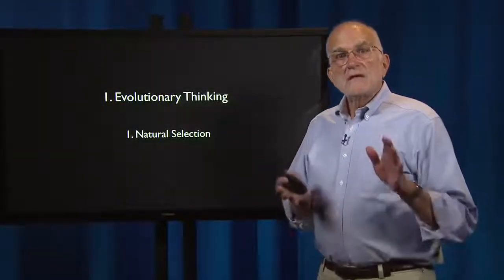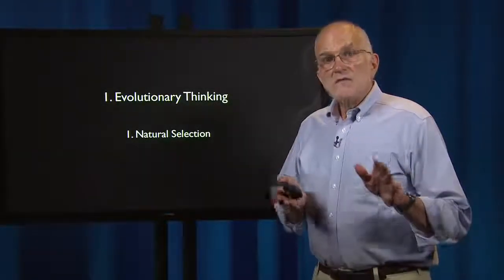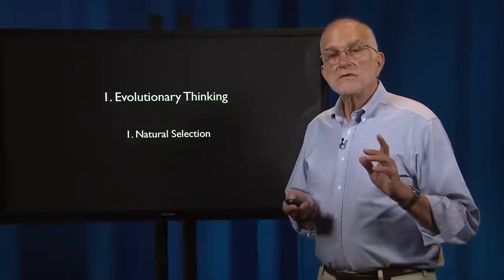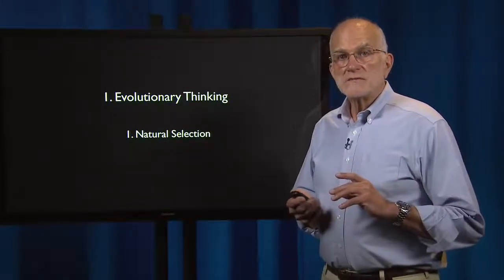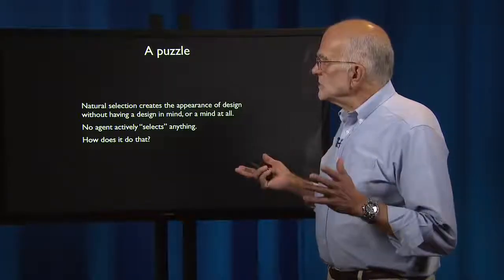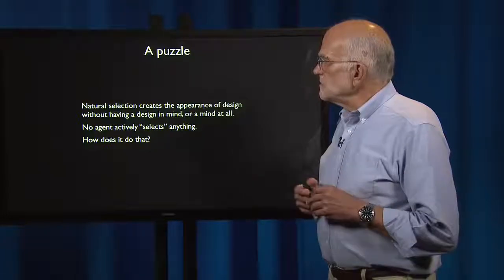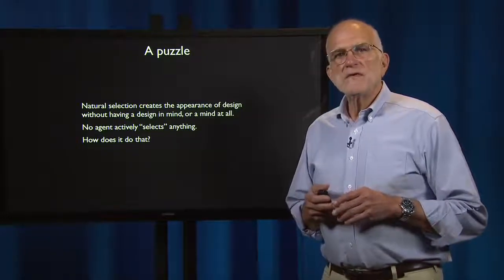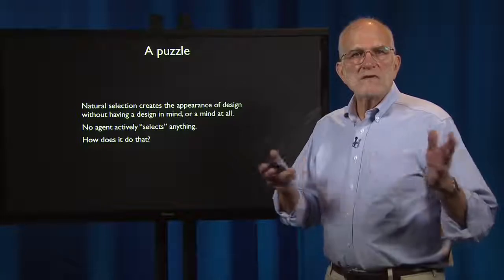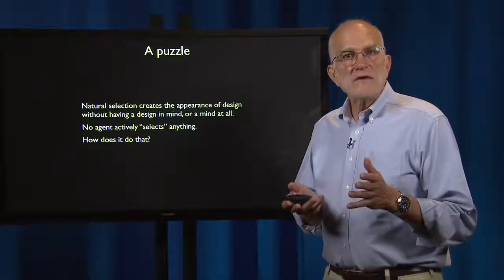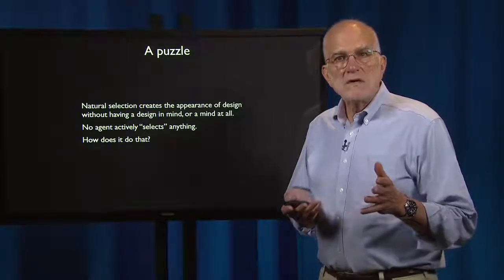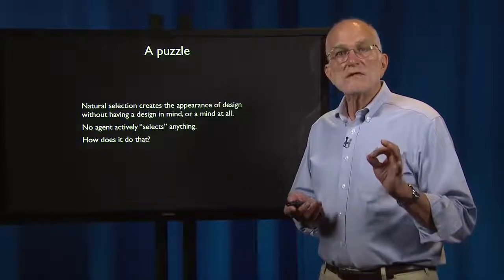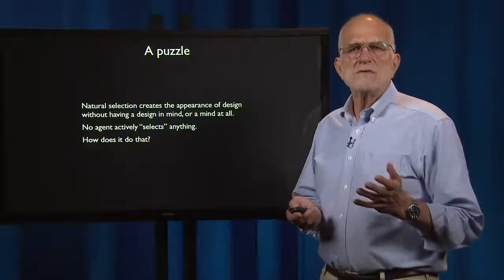We are going to look at five key concepts in evolutionary thinking, the first of which is natural selection. Natural selection presents us with a puzzle because it creates the appearance of design without having a design in mind, or even having a mind at all. There is no agent that's actively selecting anything. How does it do that?